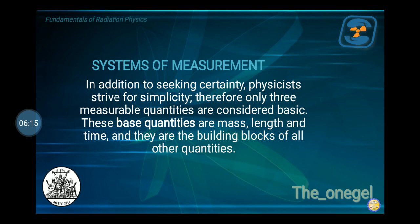In our systems of measurement, in addition to seeking certainty, physicists strive for simplicity. Therefore, only three measurable quantities are considered basic. These base quantities are mass, length, and time — and they are the building blocks of all other quantities.